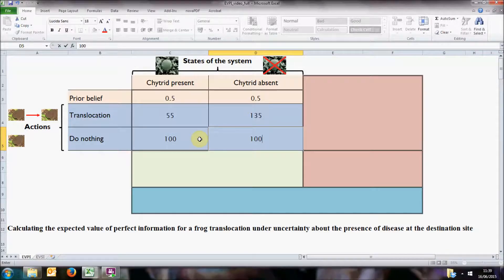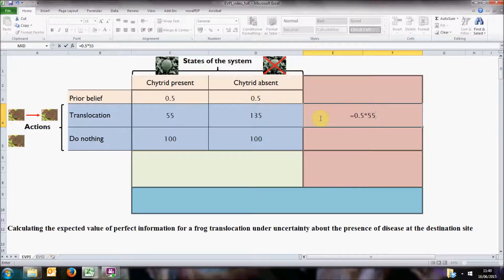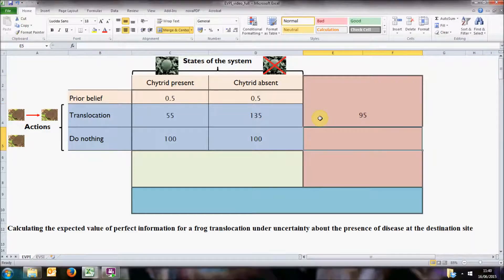So which action should we choose? We can base our decision on the expected value of each action under uncertainty. This is calculated as the average of the outcomes under each state of the system with the belief in each state as a weight. So to put it in practice, if we translocate frogs, there is a 50% chance of getting 55 individuals and a 50% chance of getting 135 individuals. In total, we have an expected value of 95 individuals.